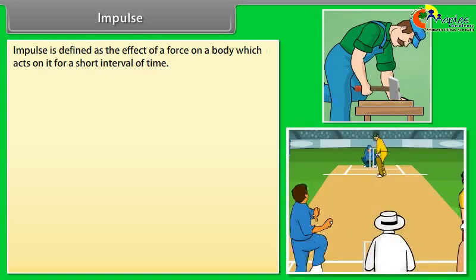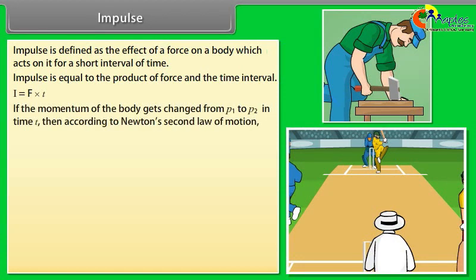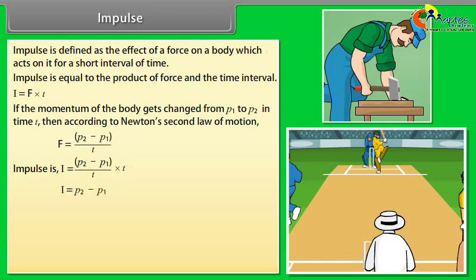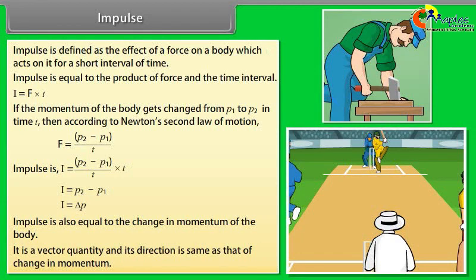Impulse is defined as the effect of a force on a body which acts on it for a short interval of time. Impulse = F × T. If the momentum of a body changes from P1 to P2 in time T, then F = (P2 − P1)/T, so Impulse I = P2 − P1 = ΔP. Impulse is also equal to the change in momentum of the body. It is a vector quantity whose direction is the same as that of the change in momentum.